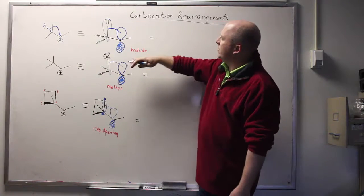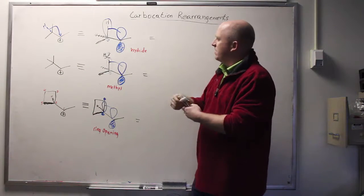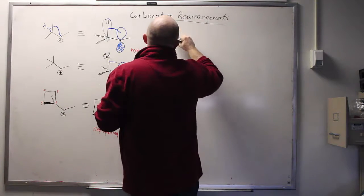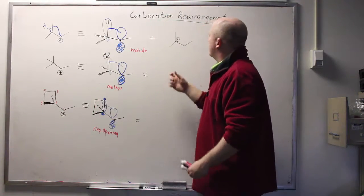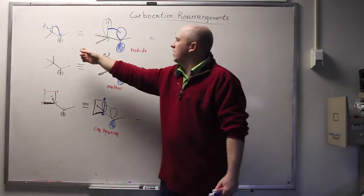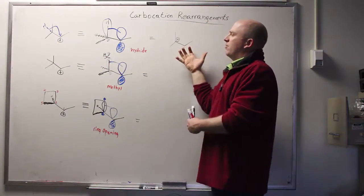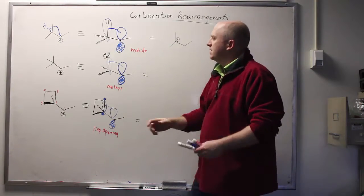So in the case where hydrogen's moving, we call it a hydride shift. The outcome is that you simply move the carbocation to the tertiary position as opposed to the secondary position. So here we had a secondary carbocation, now we have a tertiary. That's lower in energy. That's why this process happens.